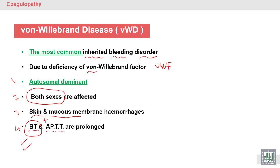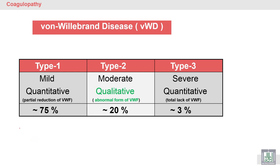Von Willebrand disease has several types. Type 1 is a mild quantitative reduction of Von Willebrand factor to about 75% of normal. Type 2 is qualitative — an abnormal form with abnormal function of Von Willebrand factor — with levels decreased to about 20% of normal. Type 3 is a severe form with total lack of Von Willebrand factor to less than 3% of normal, representing severe quantitative deficiency.